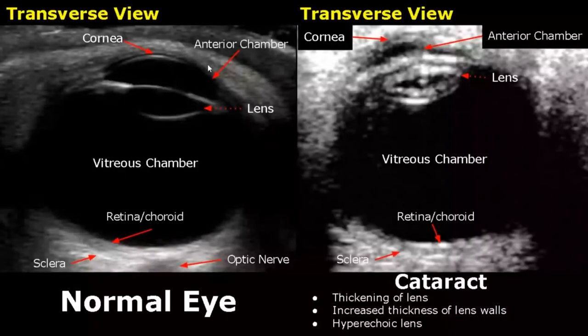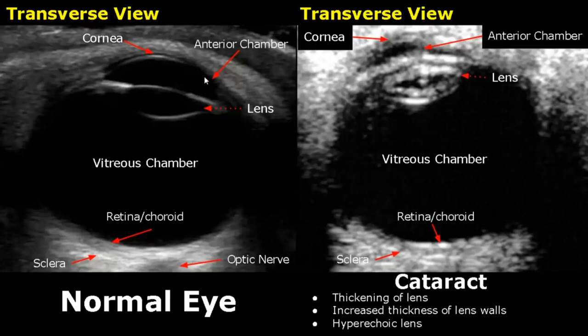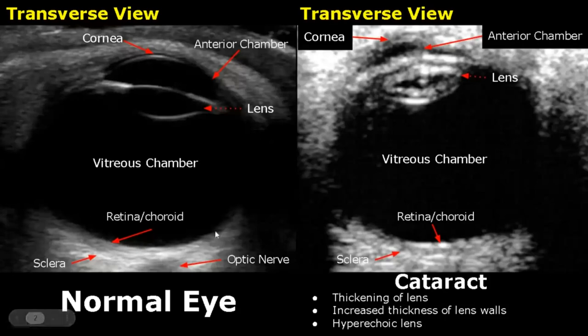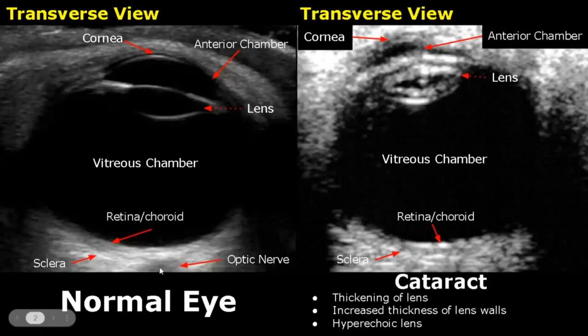Hello everyone, this is Dr. Sam and this video is about eye ultrasound. The eye can be visualized very well in a transverse view. The thin layer is the cornea, behind it is the anechoic anterior chamber, posterior to it is the lens which is also anechoic with a thin hyperechoic border. The vitreous chamber is the largest chamber in the eye and is also anechoic. The innermost layer is the retina and just behind it is the choroid. Behind these two layers is the sclera — this hyperechoic bright layer. And finally this hyperechoic area is the optic nerve.